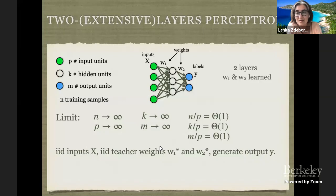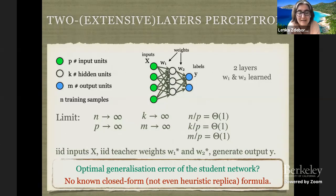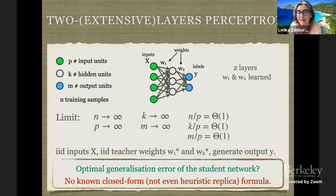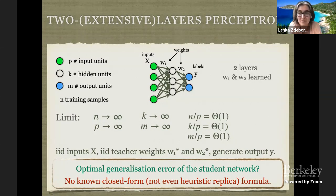We have been trying to solve this case for maybe five or six years, and so far we didn't manage. If I ask what the optimal generalization error is, I don't know. We don't even have a closed-form formula of the heuristic replica kind, even without the proof. We do have many formulas, but all of them are not exact — we always found some counterexample where it's just not giving us the right thing. So we don't have a conjecture about which I'd be confident to say is the exact learning curve for this model. This is an open problem.